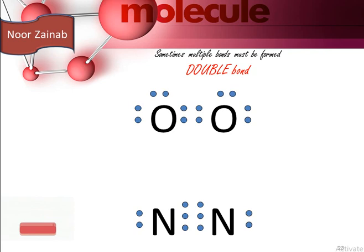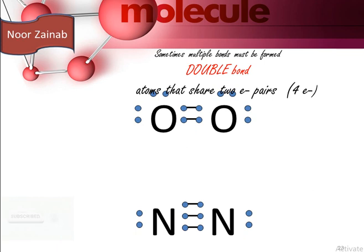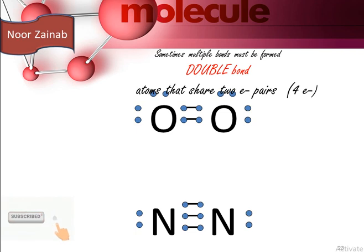Sometimes multiple bonds must be formed. For example, a double bond exists between two oxygen atoms to form oxygen gas (O₂). During double bond formation, atoms share two electron pairs — one electron pair contains two electrons, whereas two electron pairs contain four electrons.